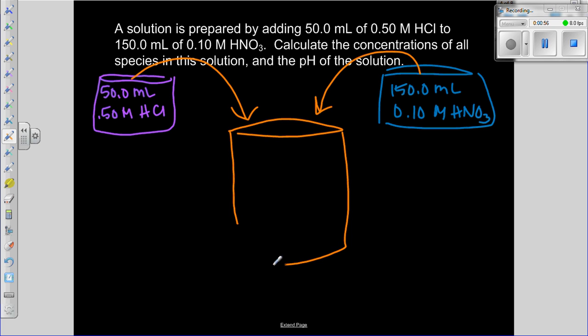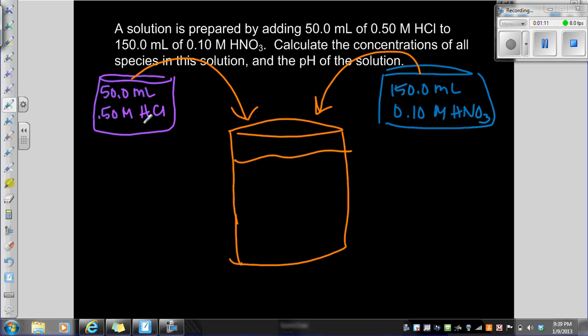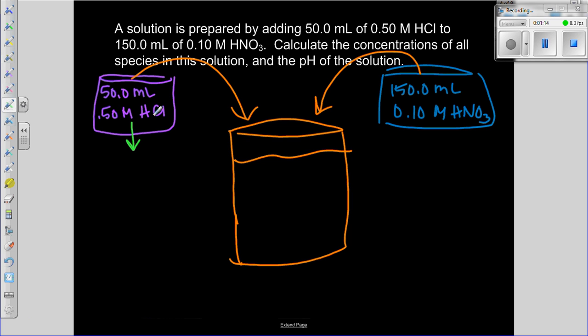We're going to take those two and mix them together into a new container. The first thing to think about is what's actually going on. In our first one we've got a strong acid so that will completely dissociate. We know our volume and molarity, so we can calculate our moles of each.